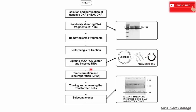Then we transfer this recombinant DNA into E. coli through electroporation. After transformation, we screen transformed cells. For screening of transformed cells we use blue-white screening, in which we can easily select our recombinant clones.